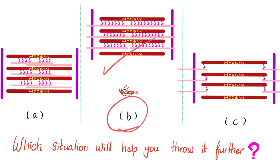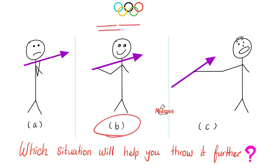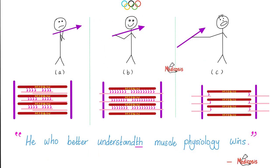In the Olympics, trying to throw a spear — which scenario helps you throw it further: A with no stretch, B with optimal stretch, or C where you're stretching your pectoralis major so much you're about to tear your rotator cuff? The optimal is B. At that point, the H zone is almost disappearing and actin and myosin are overlapping beautifully, giving the greatest number of cross-bridges. Now we know how to compete in the Olympics — he who better understands muscle physiology wins.